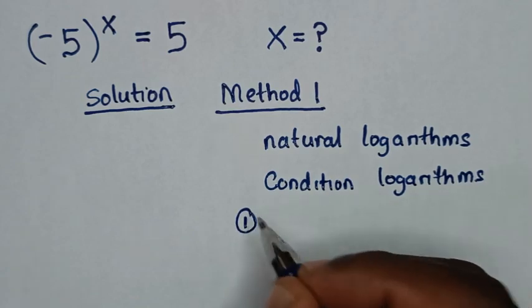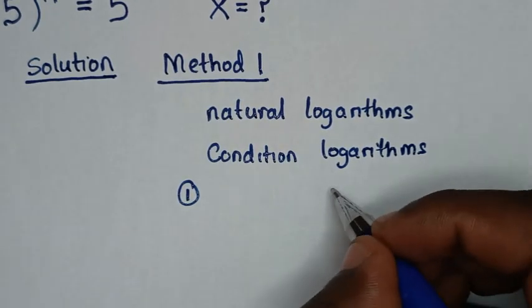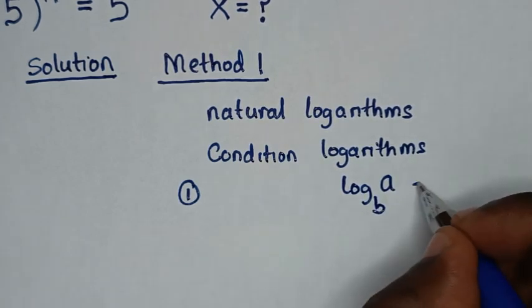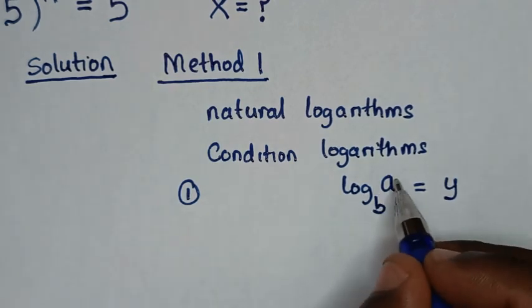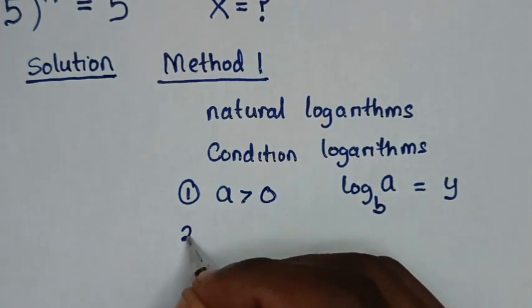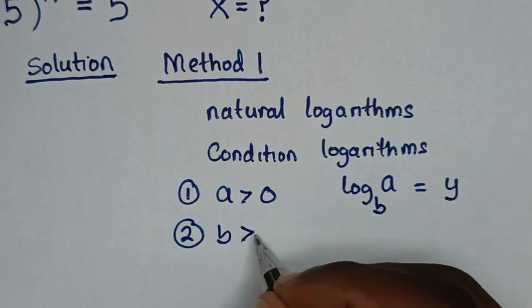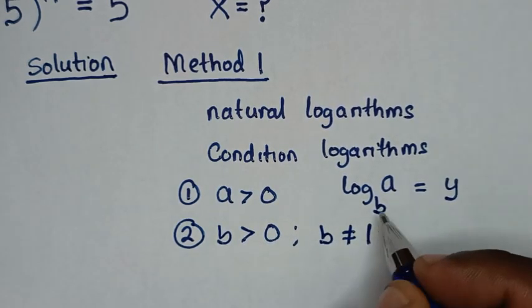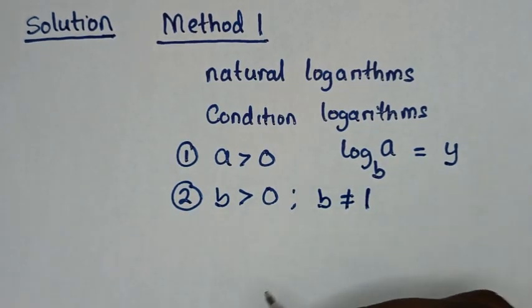The first logarithmic condition: it is in the form log of a to the base of b, is equal to y. The first condition is that a should be greater than zero. The second condition is that b, the base, should be greater than zero, and b should not be equal to 1. This is the basic condition for real solutions.